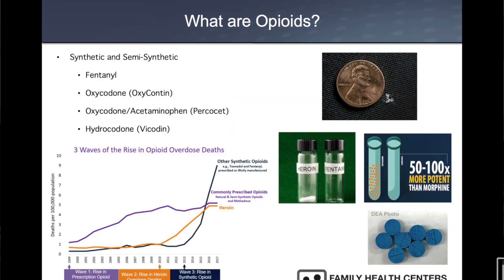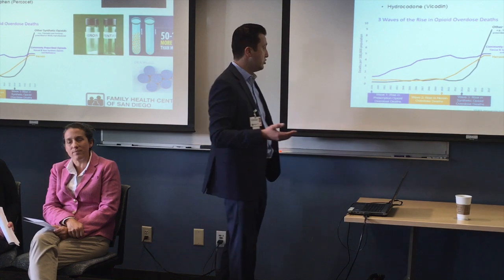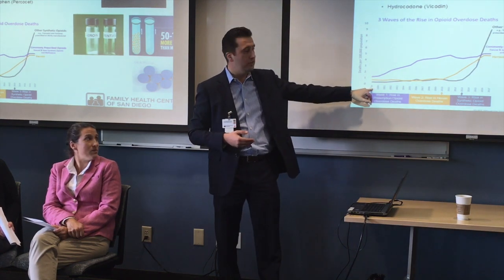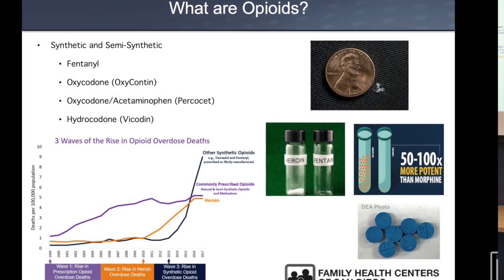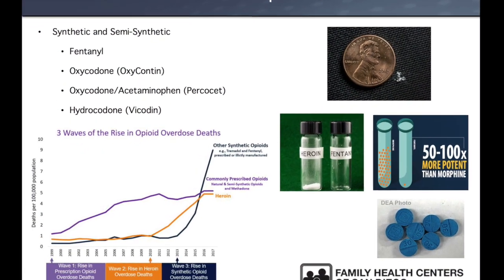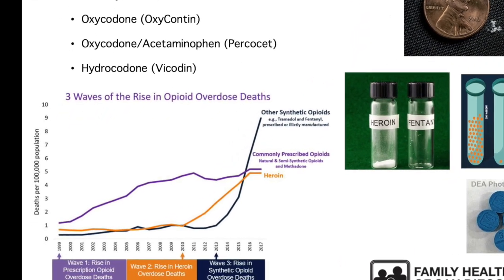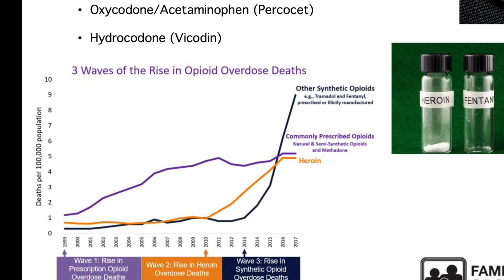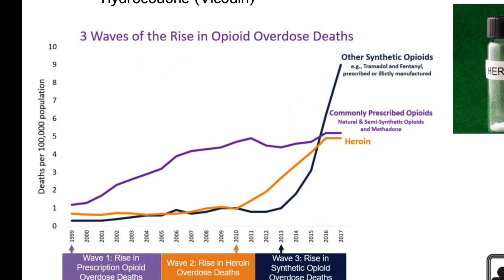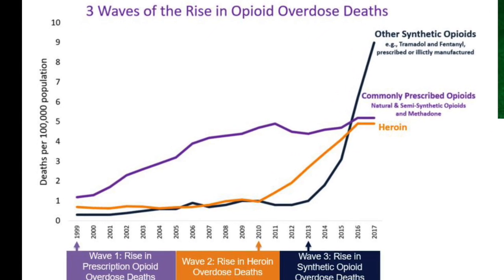Then we have opioids, which are synthetic compounds — meaning they're produced in the lab, they're man-made. Examples include fentanyl, Oxycontin, Percocet, and Vicodin. These substances are really what started fueling the opioid epidemic, beginning with prescription pain pills. We started seeing that right around the late 1990s to early 2000s, and much of the addiction we had was due to overprescribing — for various reasons, including propaganda from pharmaceutical companies.